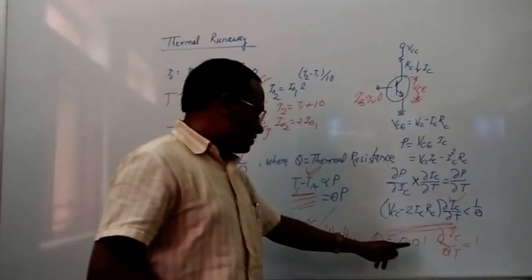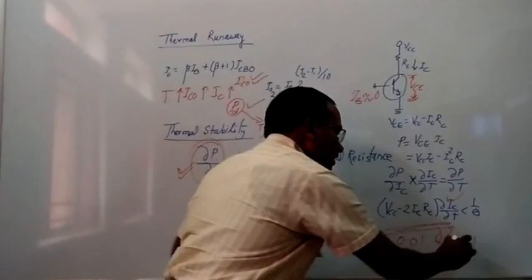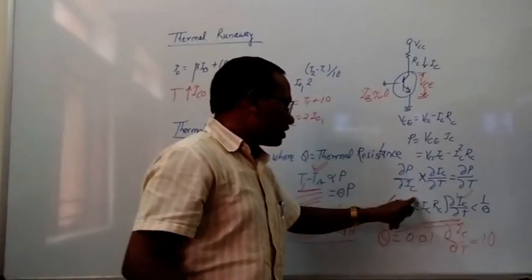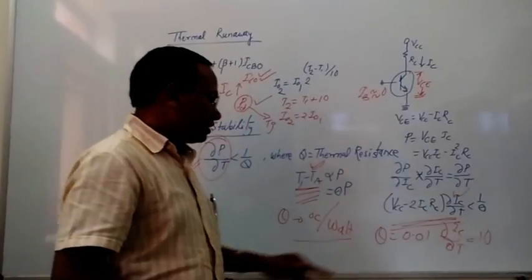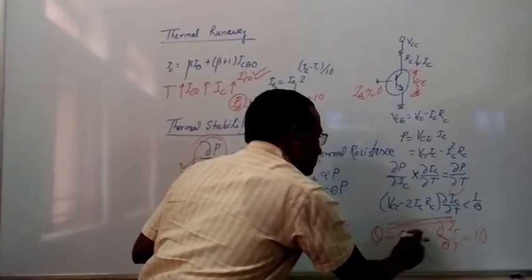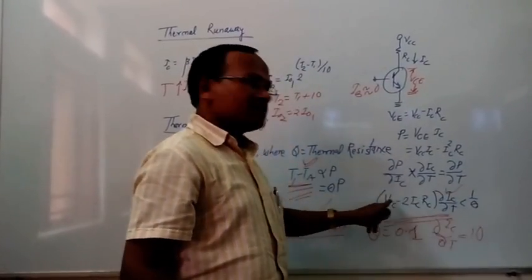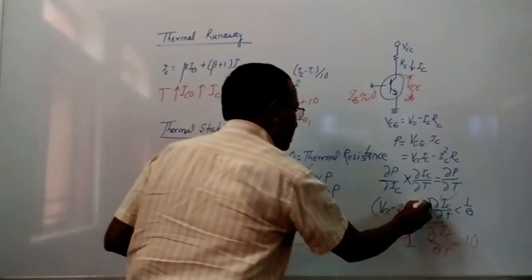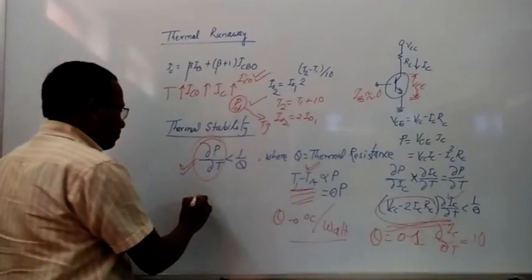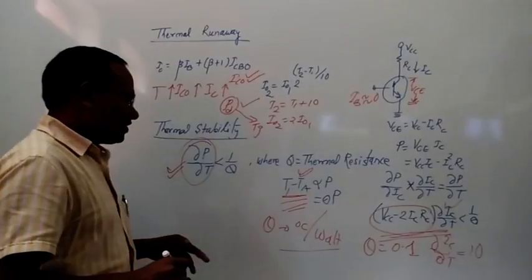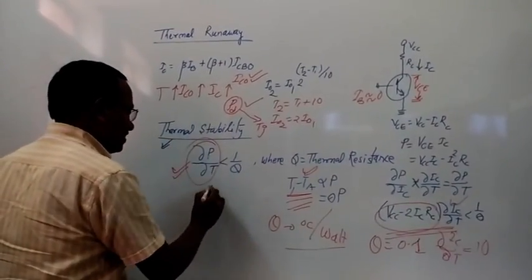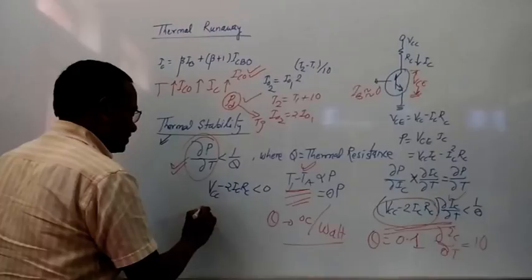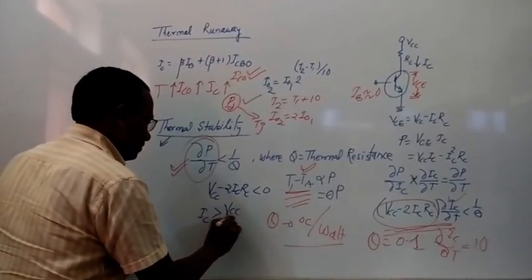Suppose ∂IC/∂T = 10 and (VCC − 2·IC·RC) = 3, then 10×3 = 30 < 100, which works. But if 1/θ = 10 and the product is 30, then 30 is not less than 10, so the condition fails. Therefore the ultimate condition for thermal stability is that VCC − 2·IC·RC must be less than 0, which means IC > VCC/(2·RC).